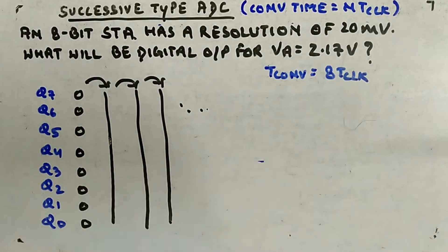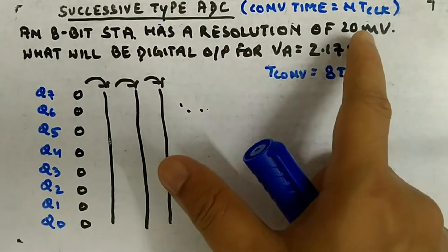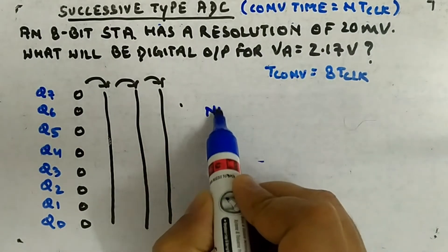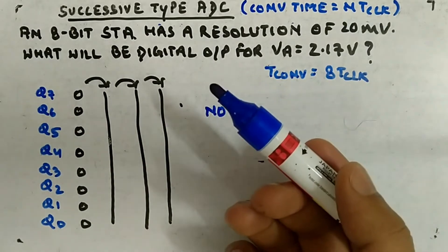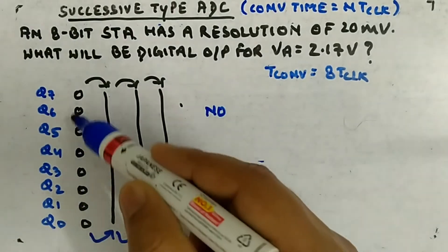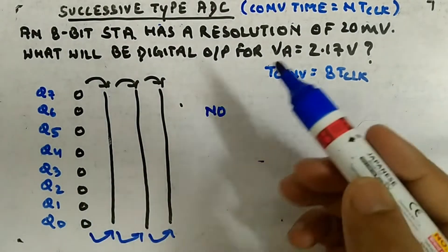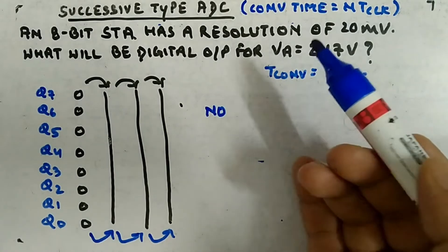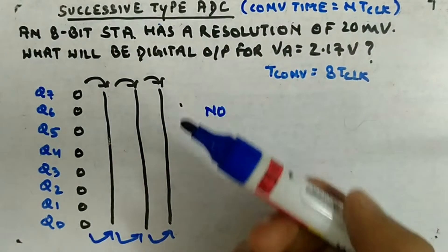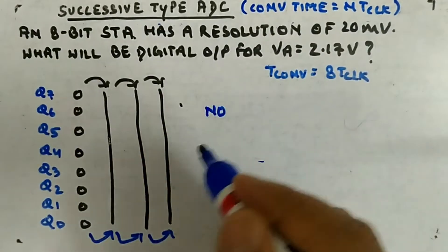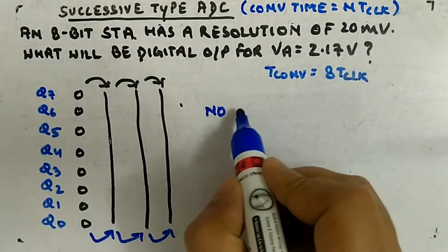That approach is not good, especially for competitive exams where you have to calculate answers in just a few minutes. The better approach is to take the resolution and the input voltage and calculate something called the number of steps. This avoids going through each clock cycle individually, and also avoids having to compute 20 millivolt times the decimal equivalent of the SAR output each time. There is a shorter way.